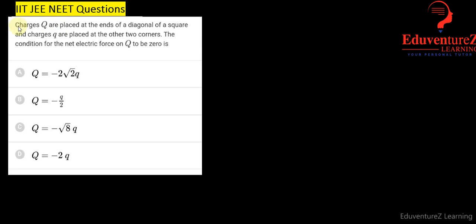Hello student, here is a question which says charges Q are placed at the ends of a diagonal of a square and charges small q are placed at the other two corners. The condition for the net electric force on capital Q to be zero is.